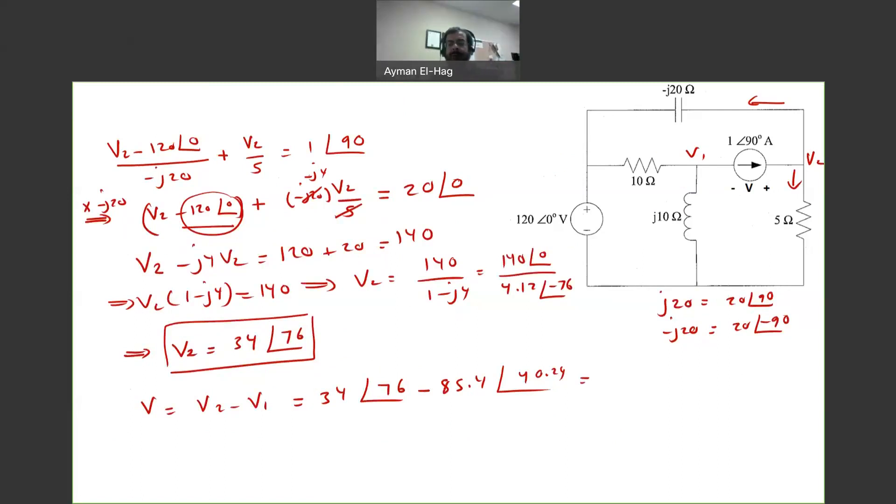So now, we are subtracting two polar numbers. We cannot do that. We have to convert each number into a rectangular number. So this is equal to 8.23 plus J33. Now, this number, this is minus 65.2 plus J55.2.